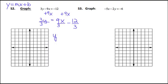And so now what I have is y equals 9 divided by 3, which is just 3x. 12 divided by 3, which is just a minus 4. And this is called my y-intercept.